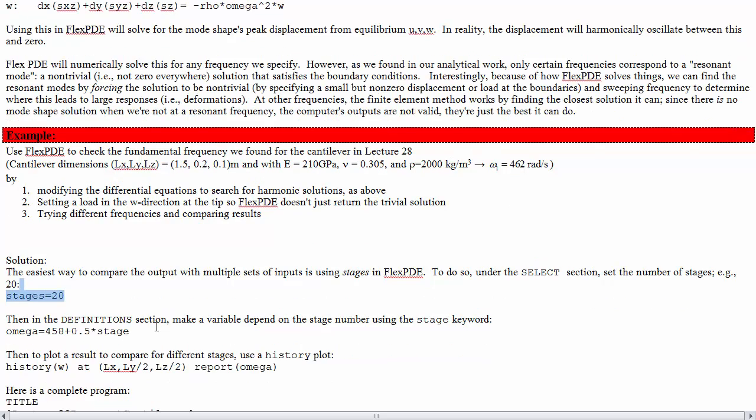Then you change one of the variables to be different on each stage. For frequency, say, we're going to say omega equals 458 plus 0.5 times stage. For whatever stage we're in the problem, it's going to be adding this. It starts at stage 1 and then it's going to resolve the problem if stage equals 2 and then resolve the problem if stage equals 3, etc.